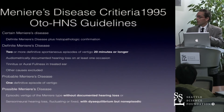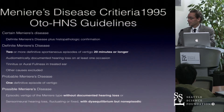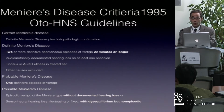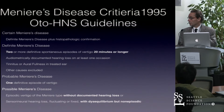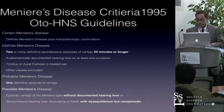Possible Meniere's is episodic vertigo of Meniere's type without documented hearing loss, or a patient with sensorineural hearing loss that is fluctuating or fixed with disequilibrium but non-episodic dizziness.